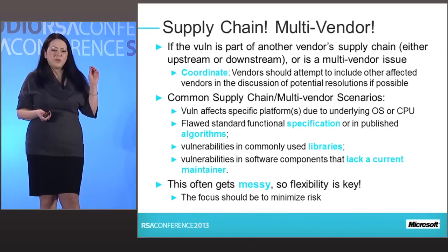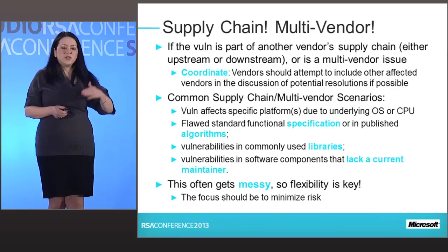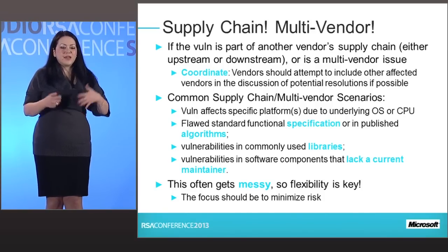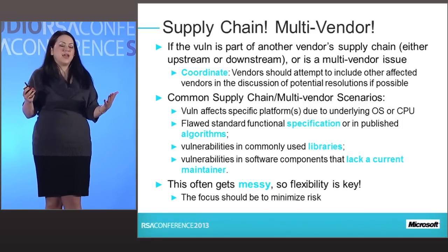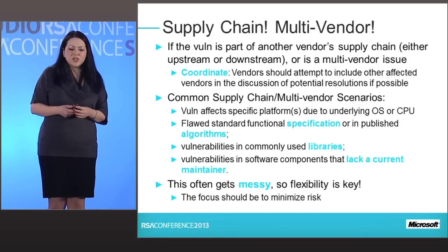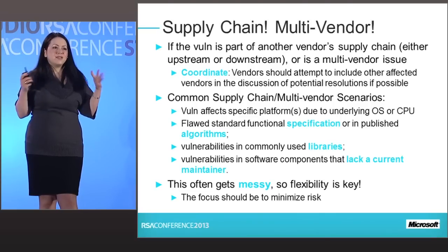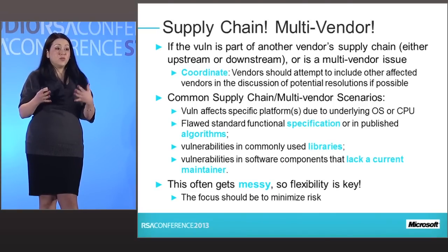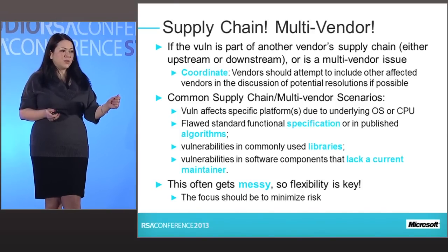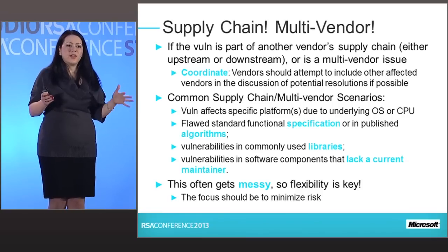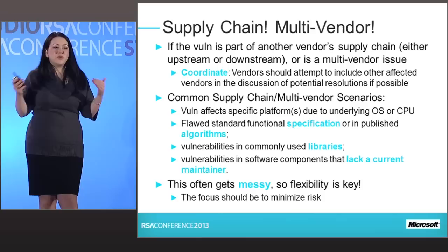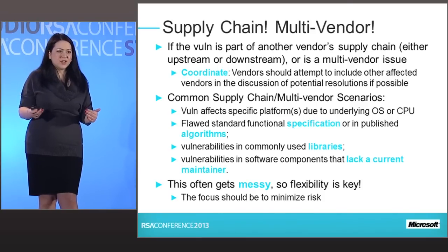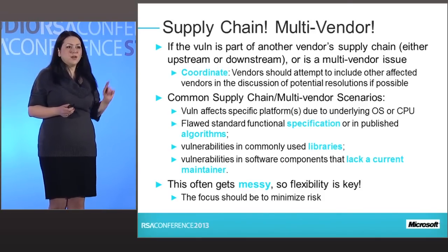On supply chain and multi-vendor issues: if the vulnerability is part of another vendor's supply chain — say it's in a library or a functional specification and turns out to be a multi-vendor issue — there are a lot of messy interconnections to negotiate. It's a good idea to get to know the security teams at other companies, especially vendors in your software supply chain. Establish a process for communication and escalation before you're actually in an emergency situation.